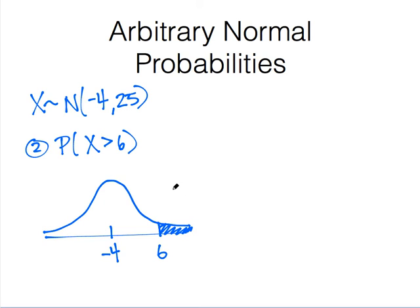And again, we can use R directly using the pnorm function. Remember that the function pnorm gives you a lower tail area, which is this unshaded portion in this situation. So, we need to do 1 minus the lower tail area to get the upper tail area.